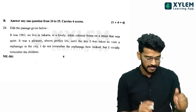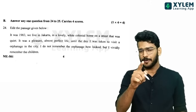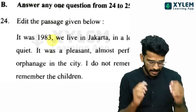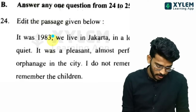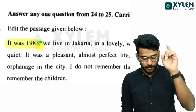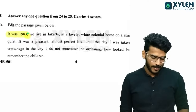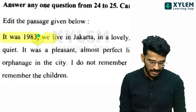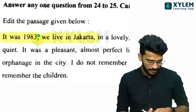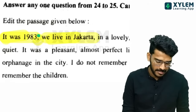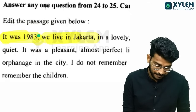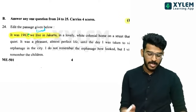First of all, here is the preposition. It was 1983 — that sentence is complete with a full stop. We live in Jakarta. We lived — simple past form. We lived there.